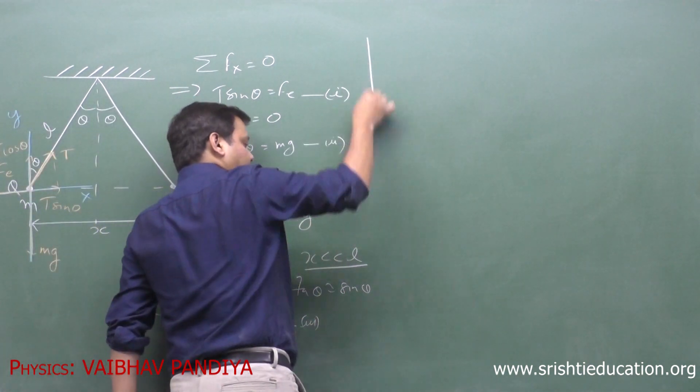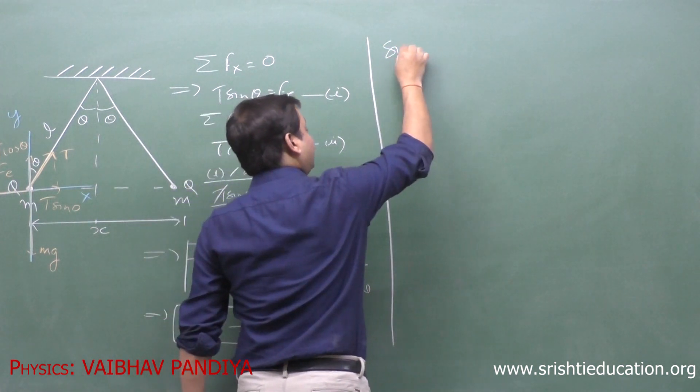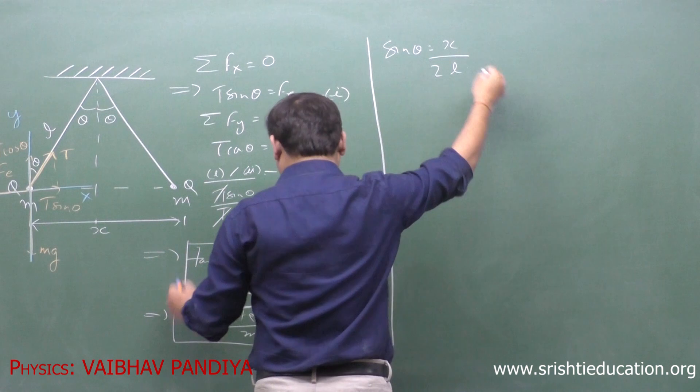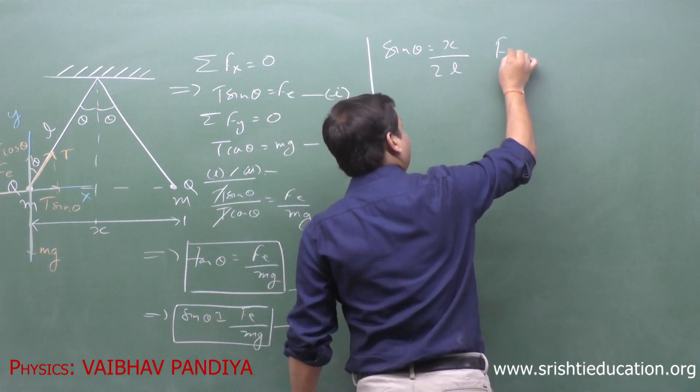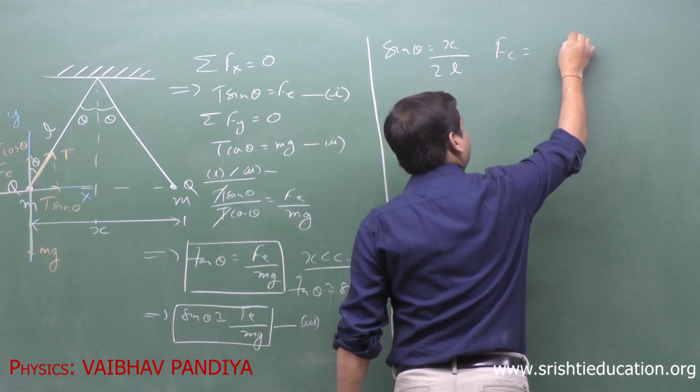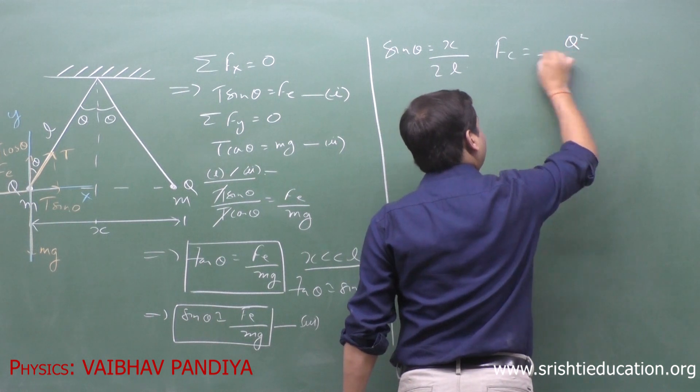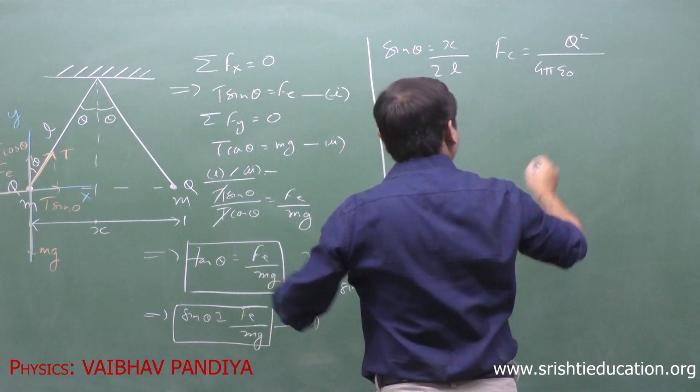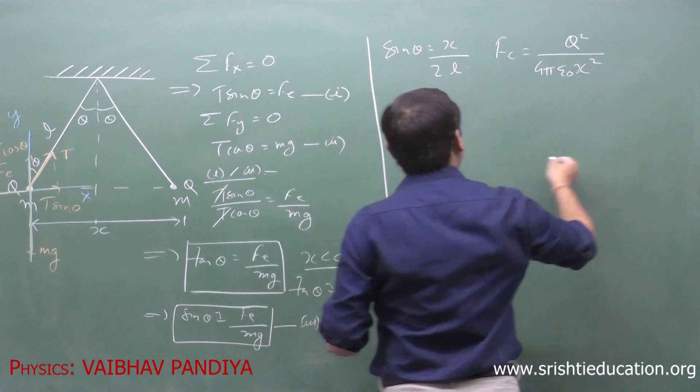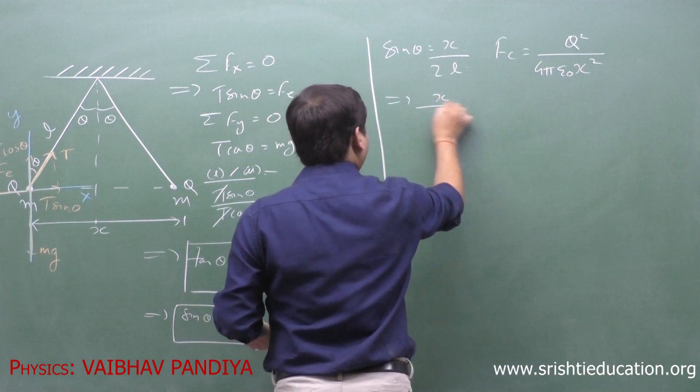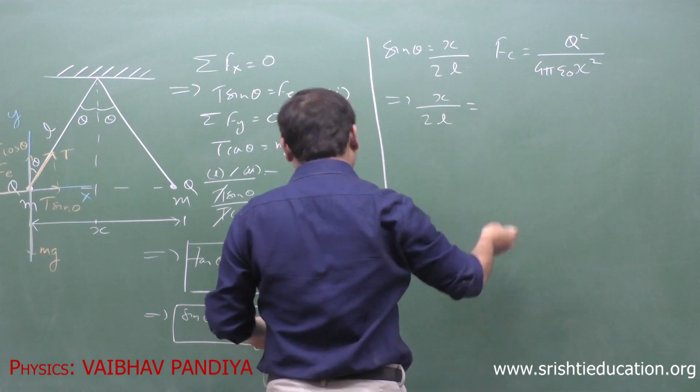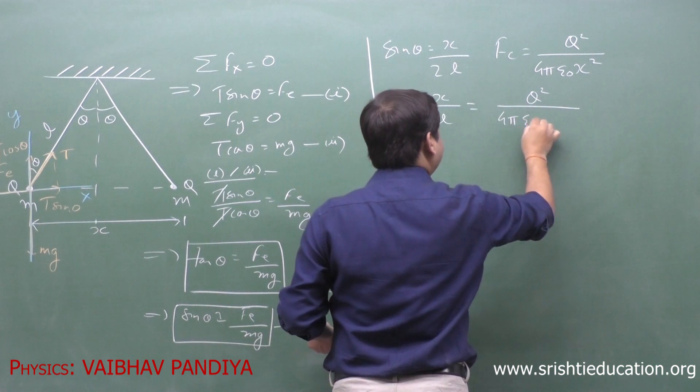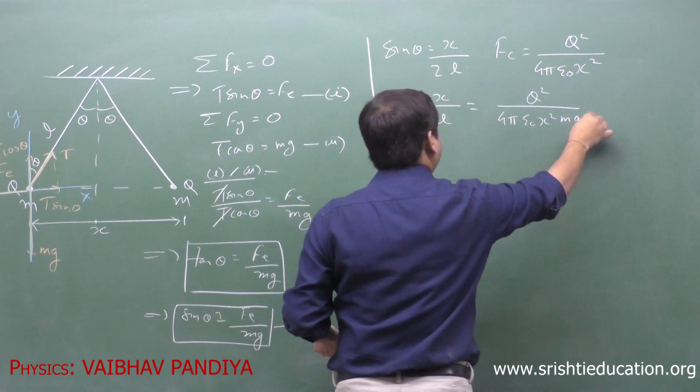Now, what will be the value of sin theta? Perpendicular by hypotenuse. And what is the value of Fe? You can apply Coulomb's law: Q square by 4 pi epsilon naught, vacuum here, distance is X squared. So we will have X by 2L equals Q squared divided by 4 pi epsilon naught X squared Mg.